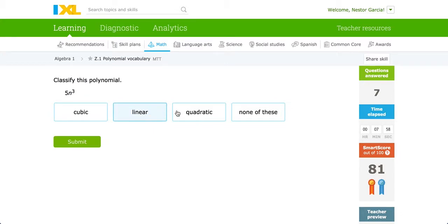Linear, meaning to the power of 1. Quadratic, meaning to the power of 2. Cubic, meaning to the power of 3. None of these in this case refers to anything beyond the third degree.